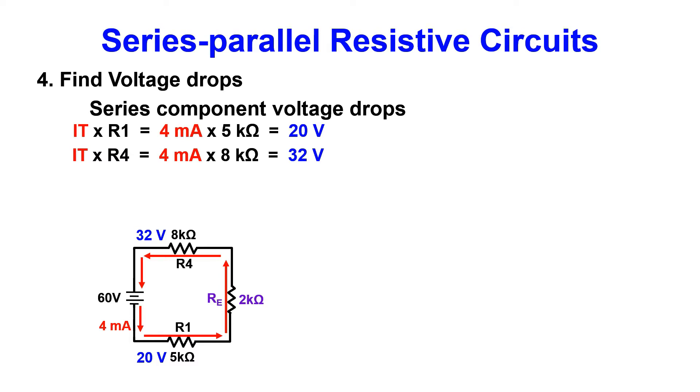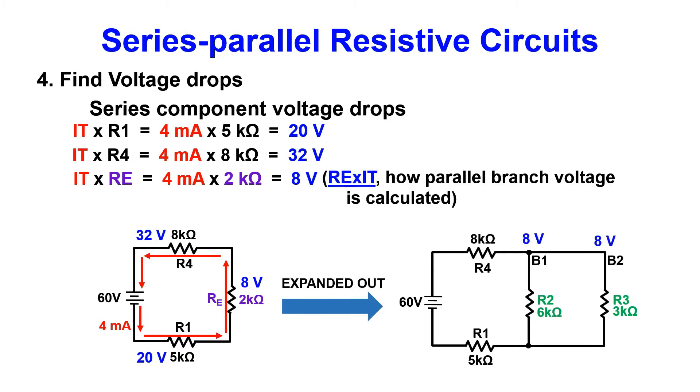Now for the part that you cannot forget, RE times IT, or RE times IT. 4ma times 2k gives us 8 volts, which will be seen on both branches of the parallel half of the circuit. If we wanted to solve for current in either branch 1 or branch 2, we would just utilize Ohm's law. T-chart it up and divide away.